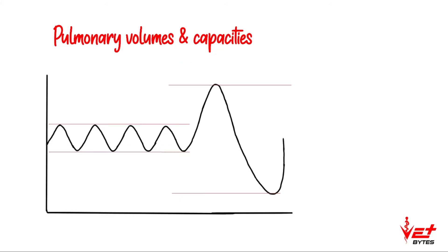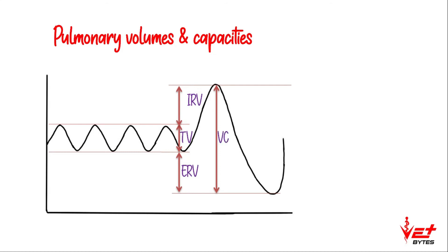The volume above the tidal volume is the inspiratory reserve volume and below it is the expiratory reserve volume. The sum of all three — inspiratory reserve volume, tidal volume, and expiratory reserve volume — is called vital capacity.